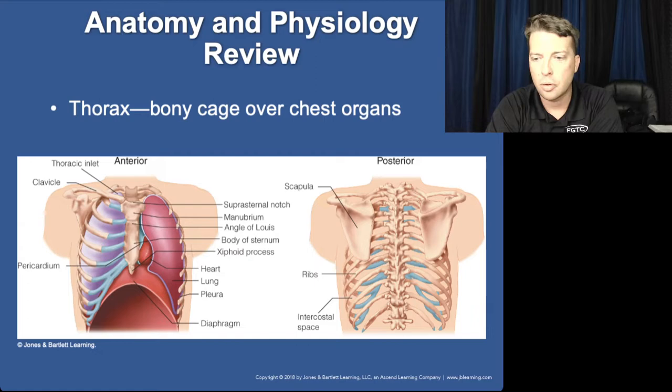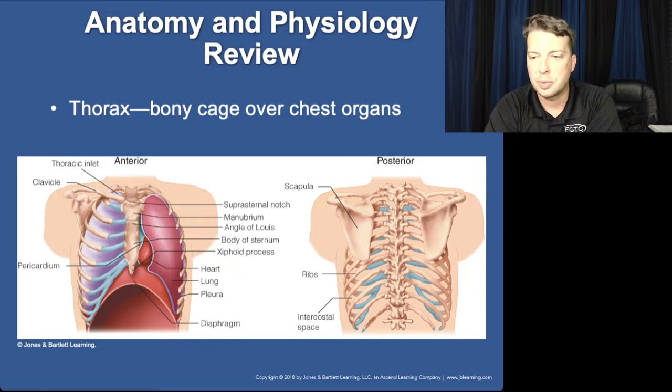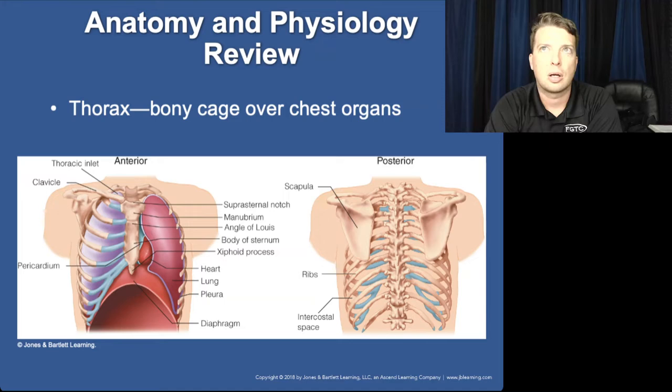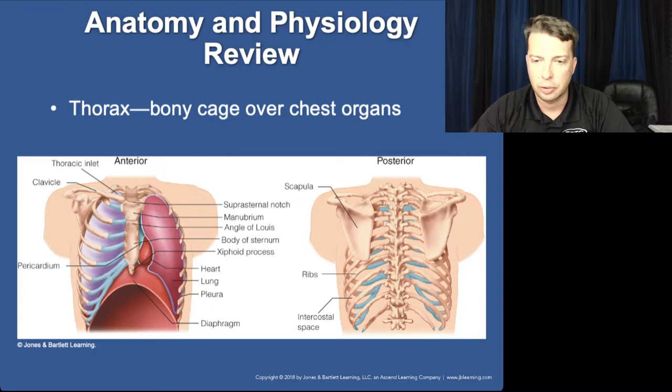The false ribs are ribs nine and ten because their cartilage wraps around and connects to the cartilage on rib eight. Ribs eleven and twelve are the floating ribs — a separate category. They loosely protect the kidneys, but because their anterior end is not connected to anything, they risk puncturing kidneys and abdominal solid organs like the spleen or liver if pushed hard enough.